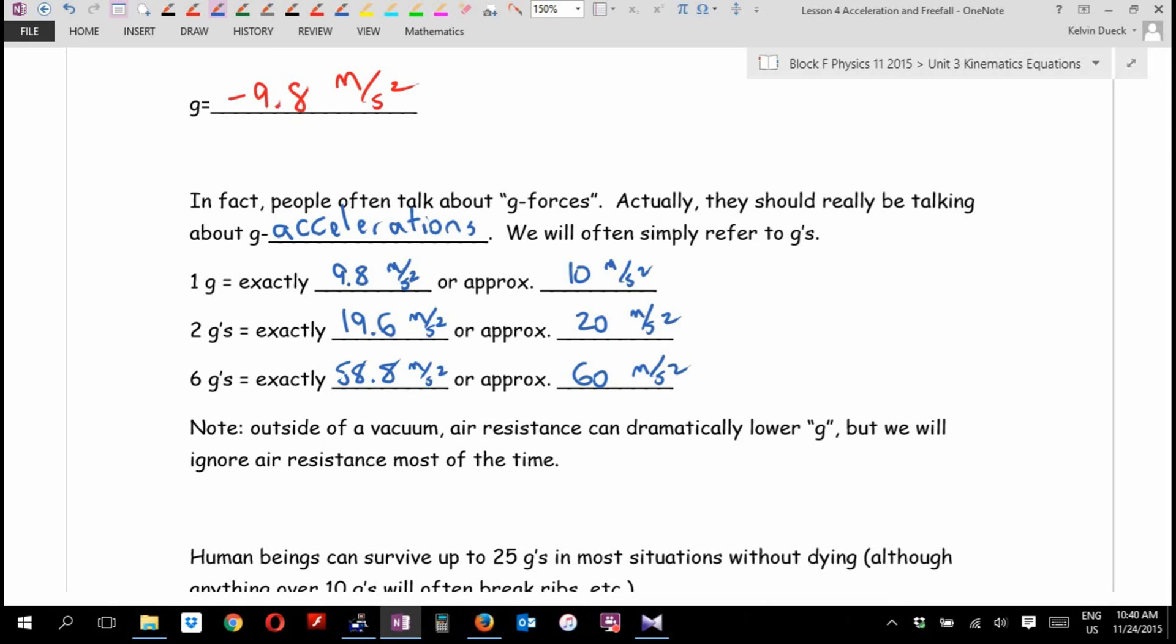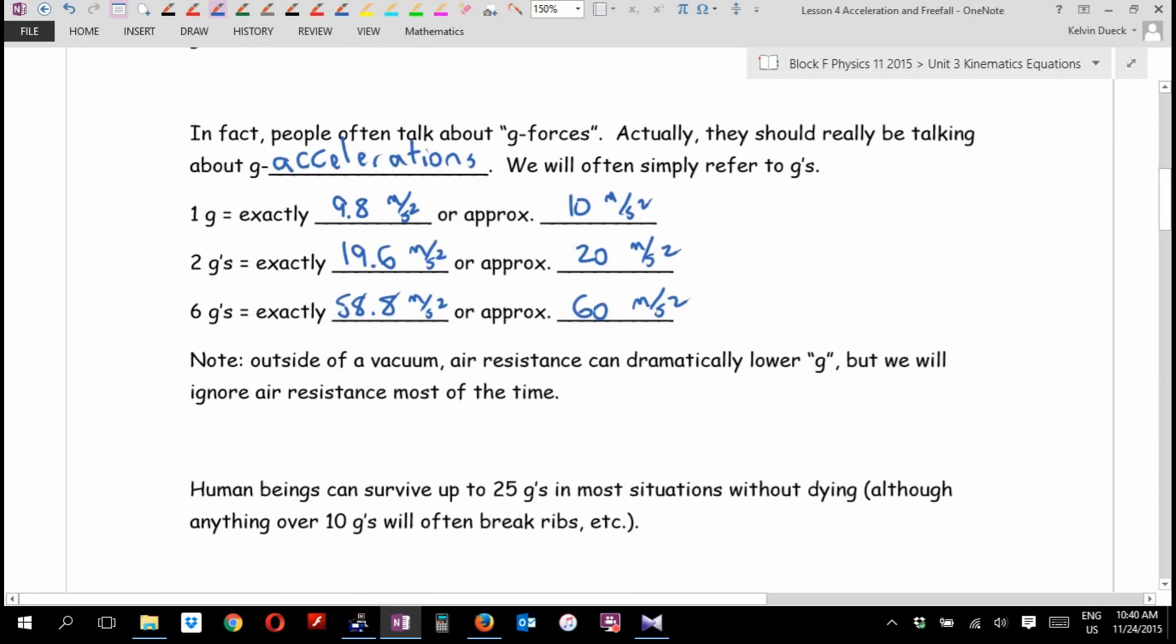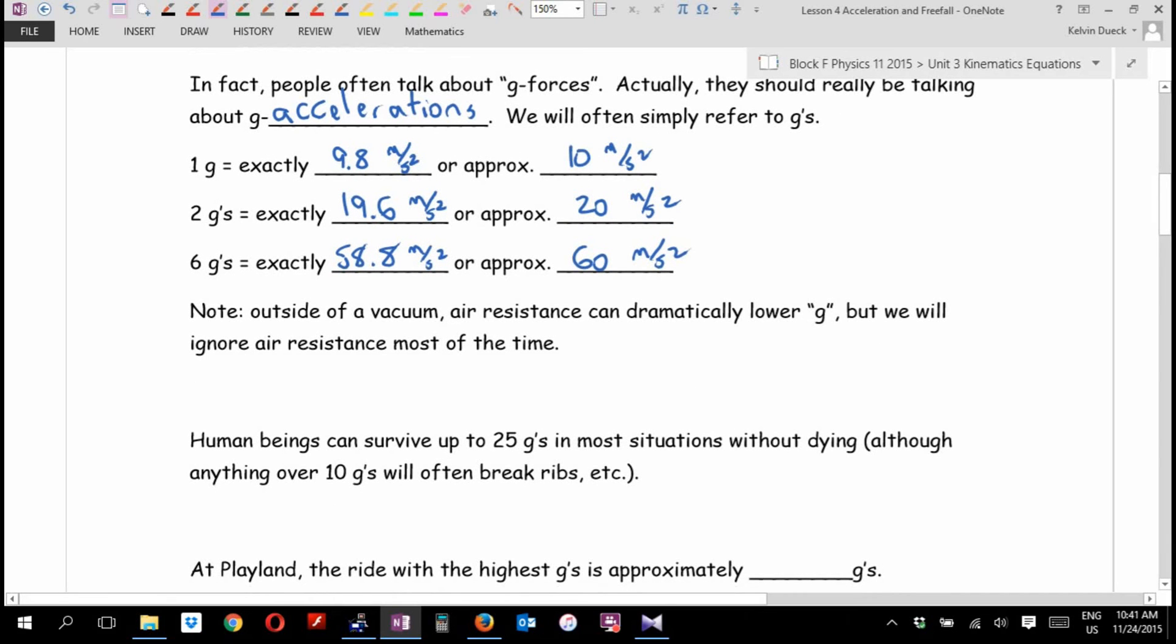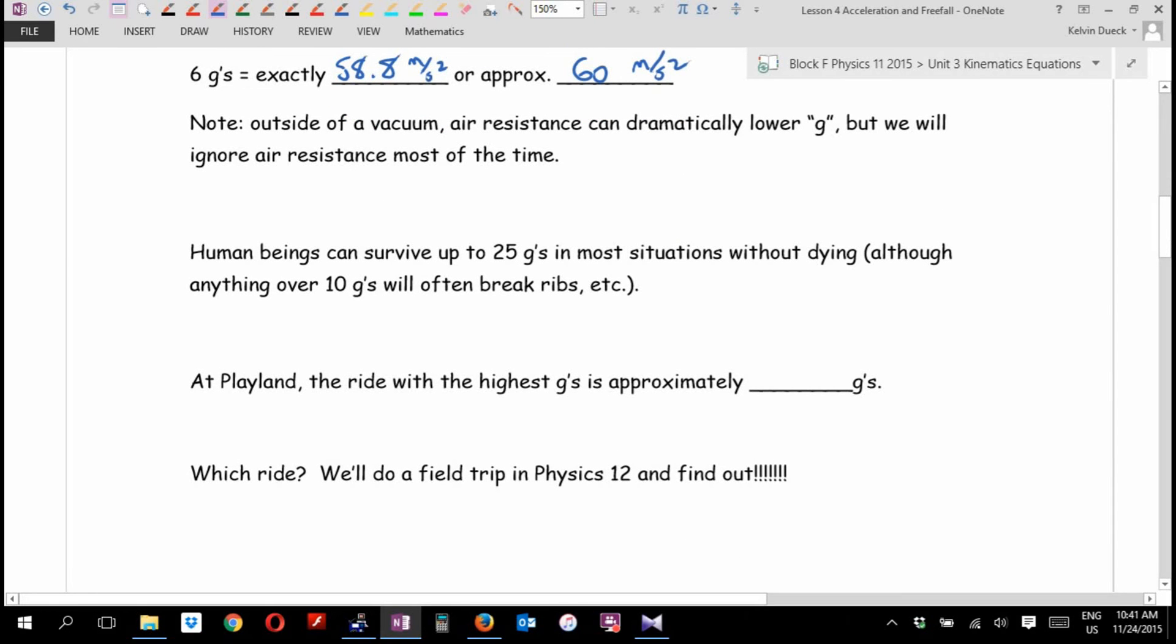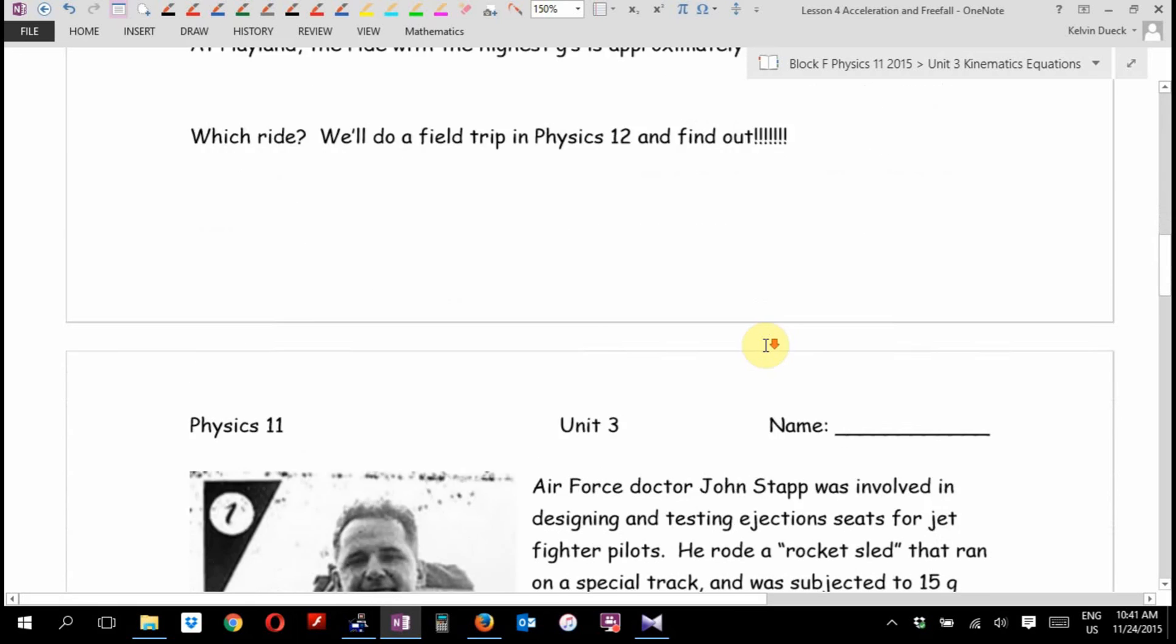So people often talk about g-forces. Really, they should be talking about g-accelerations. I hate the term g-forces because it's not a force. It's an acceleration. But I also understand it's part of our consciousness. So Alex, what you'll hear me say all the time is I'll just talk about g's. So 1g is exactly 9.8 meters per second squared, or approximately 10 meters per second squared. 2g's is exactly 19.6 meters per second squared, or about 20. Give or take. So 6g's is exactly 58.8 or approximately 60. Outside of a vacuum, air resistance can dramatically lower g, but most of the time, except when I jump out of an airplane, most of the time we're going to ignore air resistance. Most of the time when we're dropping stuff, you want to imagine that what we're dropping is this thing, which is not affected by air resistance much at all. So when we're talking about launching projectiles or dropping objects, let's pretend they're round, aerodynamic, and heavy and dense. Just to give you some context, human beings can survive up to 25g's in most situations without dying, but anything over 10g's, depending on how it hits you, will often break ribs or bones or concuss or something like that. Playland, the ride with the highest g's is approximately 3.5. Which ride? If you take Physics 12 next year, you can find out. Surprisingly, not the roller coaster or the elevator.